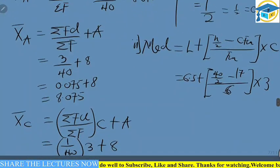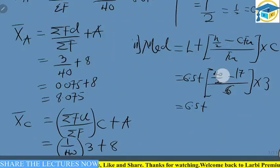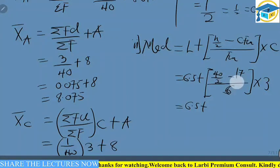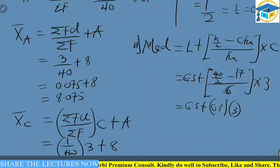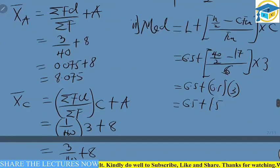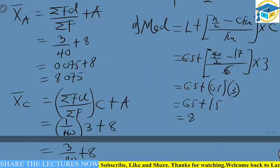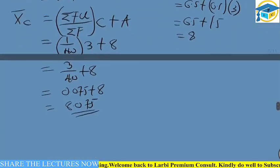The class width is 3. So the bracket gives 0.5 × 3 = 1.5. Therefore: 6.5 + 1.5 = 8. The median value from this grouped data set is 8. Now let's move on to talk about the mode.